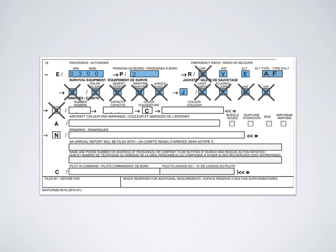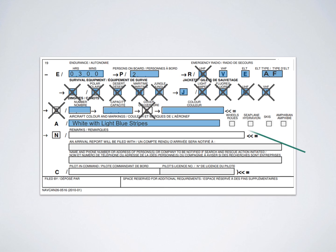For dinghies: if you're not carrying any, just cross off the D and leave the following sections blank. If you're not carrying any cover for the dinghy, cross off that section and leave the next blank. For aircraft color and markings, fill this in to help search and rescue identify you - for example, white aircraft with light blue stripes. Denote whether it's wheels, skis, floats, etc. Note that in this section, ticking a box means you have that equipment, which is the opposite of the previous section where you cross off what you don't have.